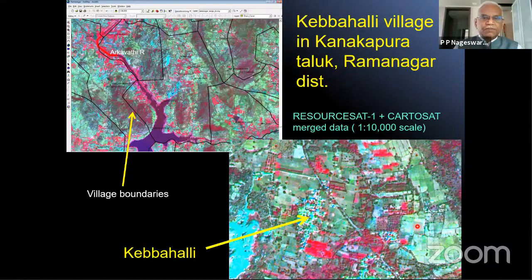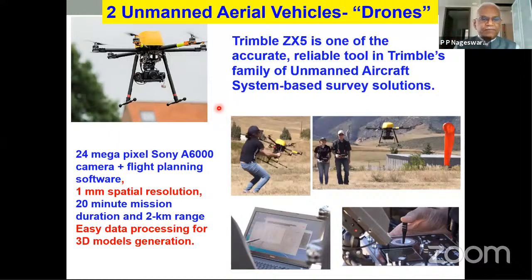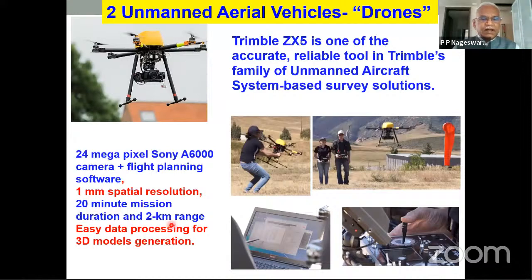Another tool available for remote sensing today is unmanned aerial vehicles, also called drones. UAVs have revolutionized the technology of sensing from a distance. Today we talk of spatial resolutions of one millimeter to a few centimeters from sensors like a 20-megapixel Sony A6000 camera. With flight planning software, it has about 20 minutes endurance at a range of two kilometers, and can even provide 3D models.